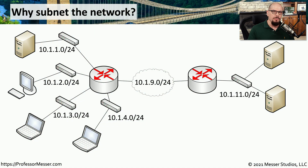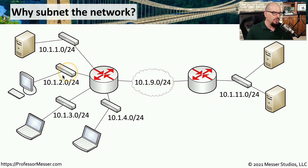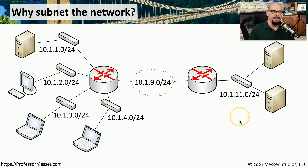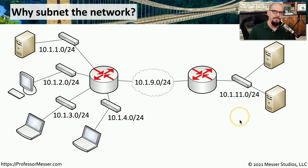If you've ever seen a network diagram, then you've probably seen a mixture of routers and IP addresses with subnet masks. Each one of these networks is subnetted into its own range of IP addresses. The question, of course, is why do we go through this process of performing all of these calculations, splitting the network up into smaller pieces, and having to manage all of these separate IP subnets?